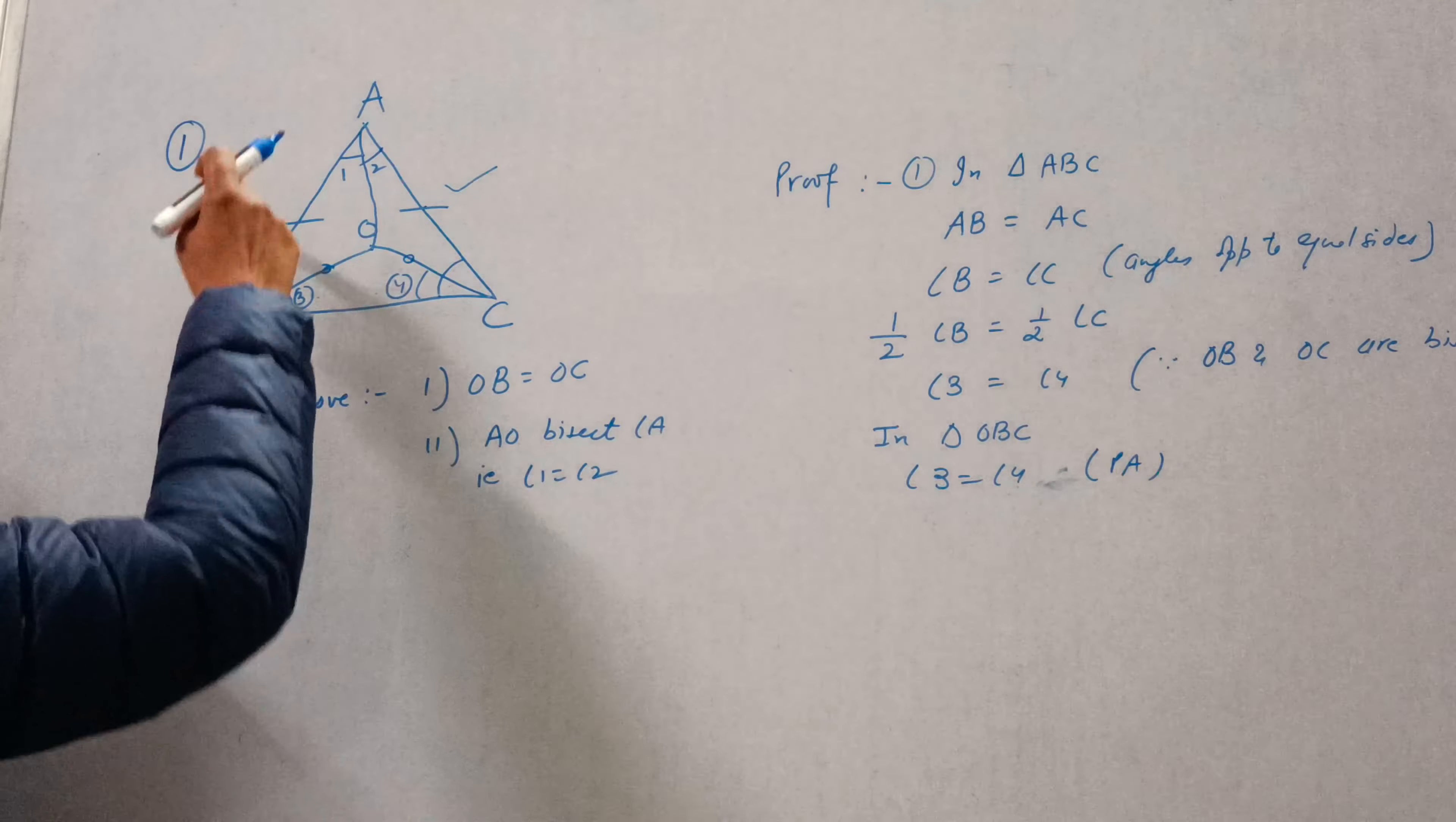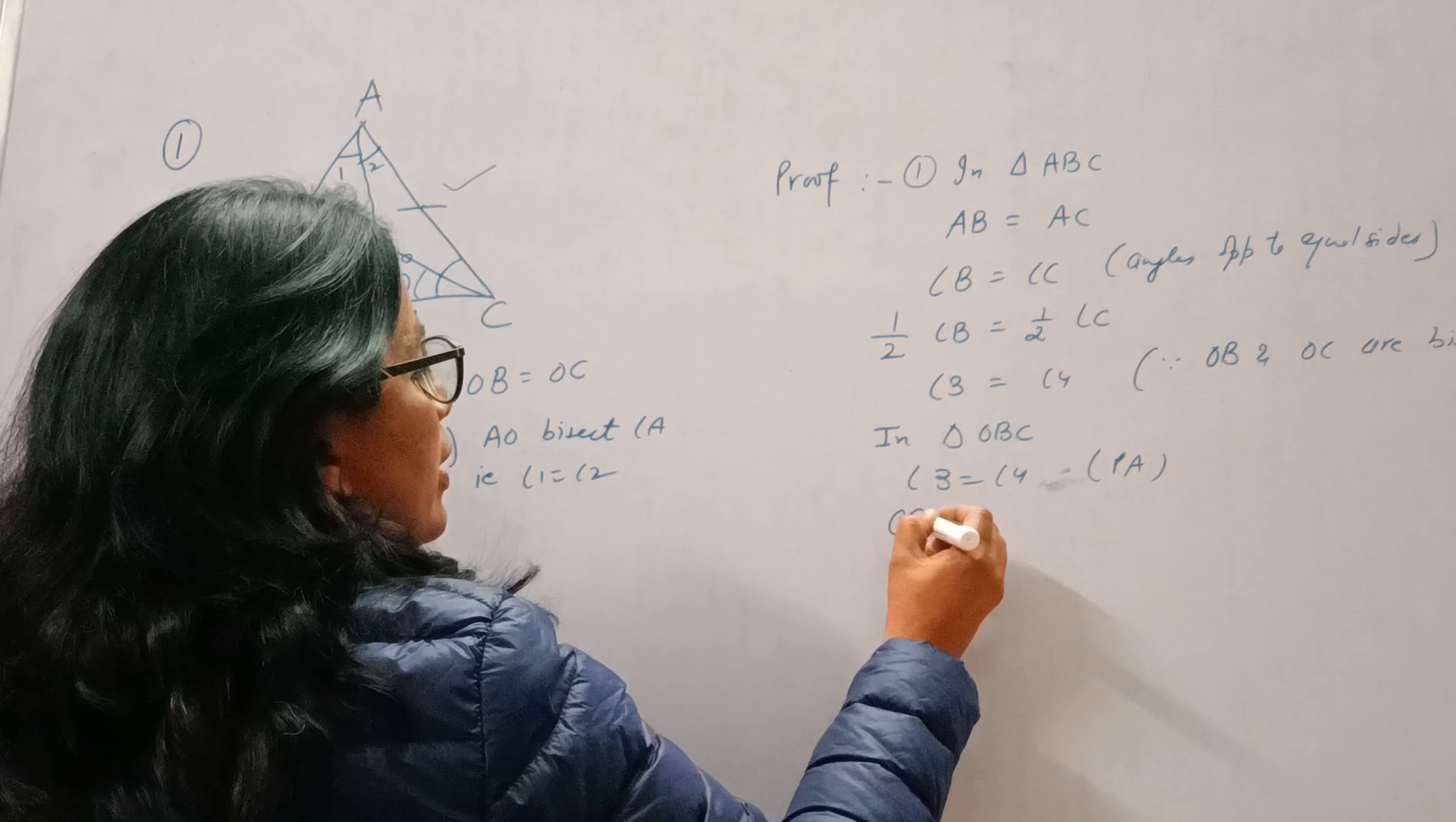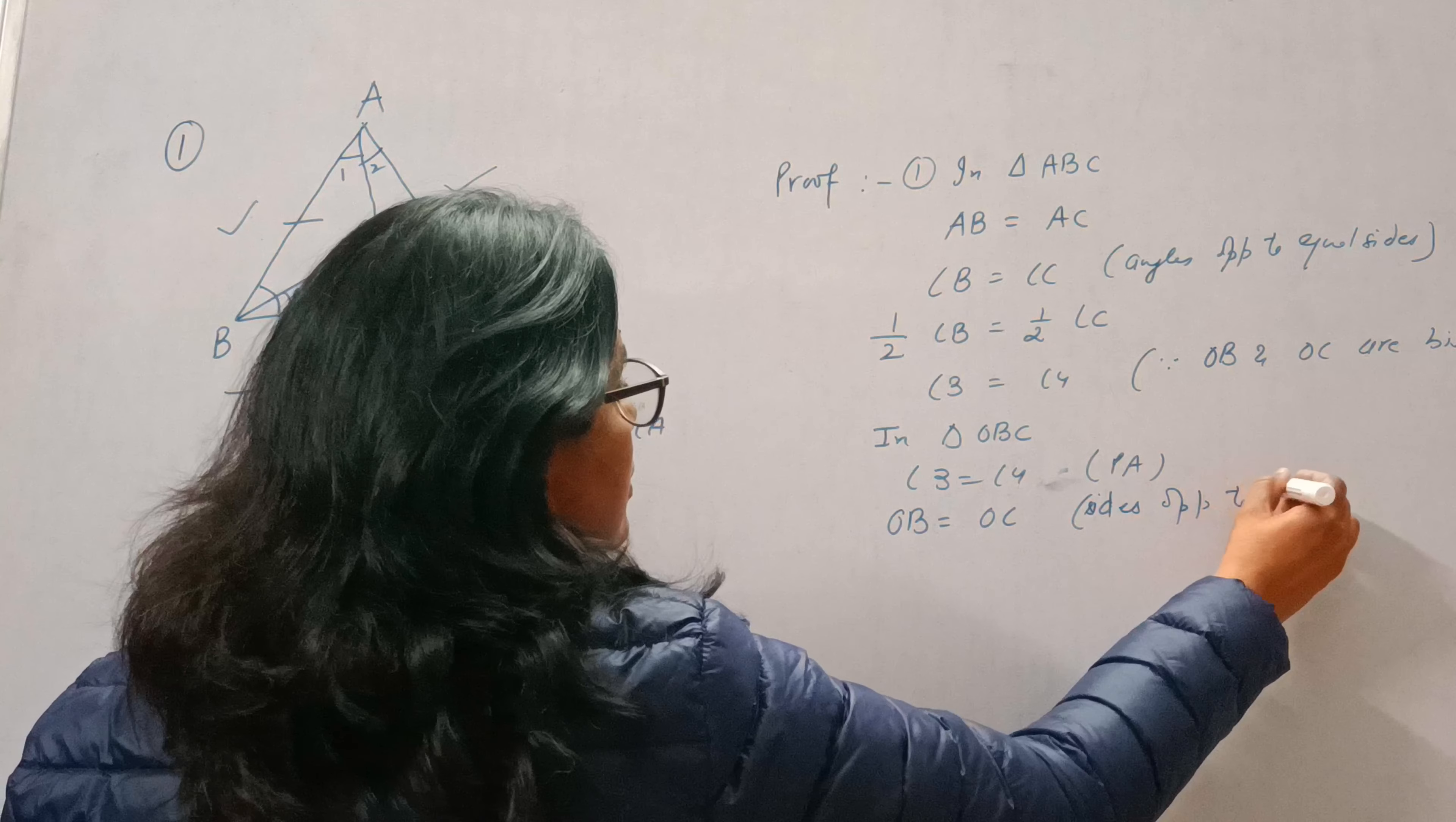If angles are equal, then sides opposite to them are also equal. So we can write OB equals OC, sides opposite to equal angles. This is the first part.